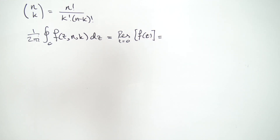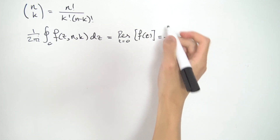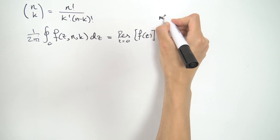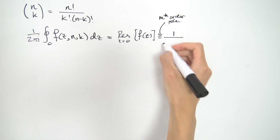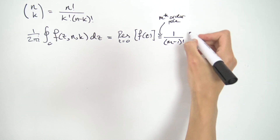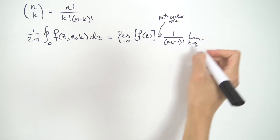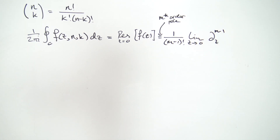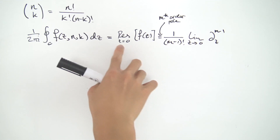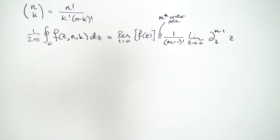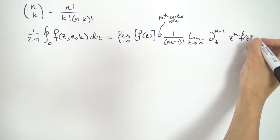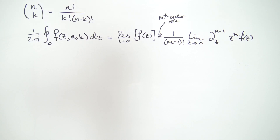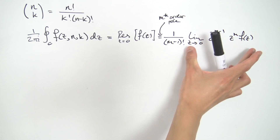So where do we go from here? We can just use the formula for residues. We don't know what the order of the pole is, so let's use the generalized formula for high-order poles. If we assume this is an m-th order pole, then the formula is: one over (m minus one) factorial, times the limit as z approaches zero of the (m minus one)-th order derivative with respect to z of z^m times f(z).